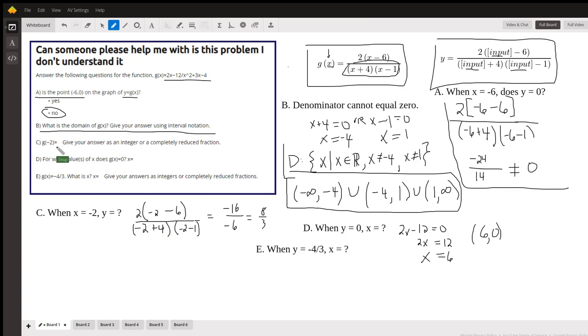For part c, they ask the question, what is y when x is negative 2? So that just means put negative 2 in where it says input. So here's negative 2 in the input section. Just evaluate it. The numerator evaluates to 2 times negative 8, negative 16. The denominator 2 times negative 3 is negative 6. That reduces to 8 thirds.